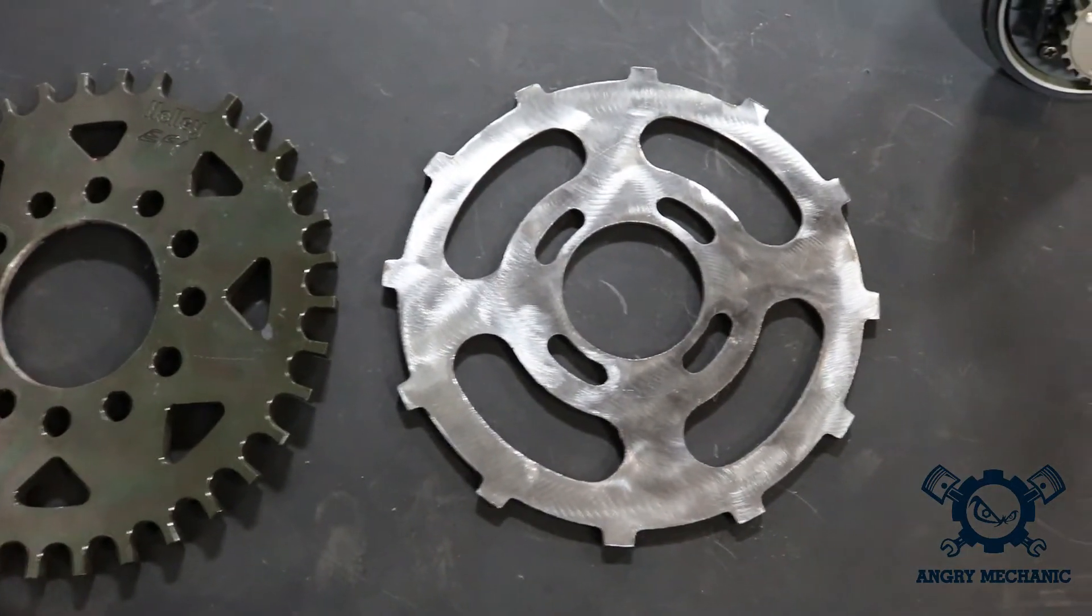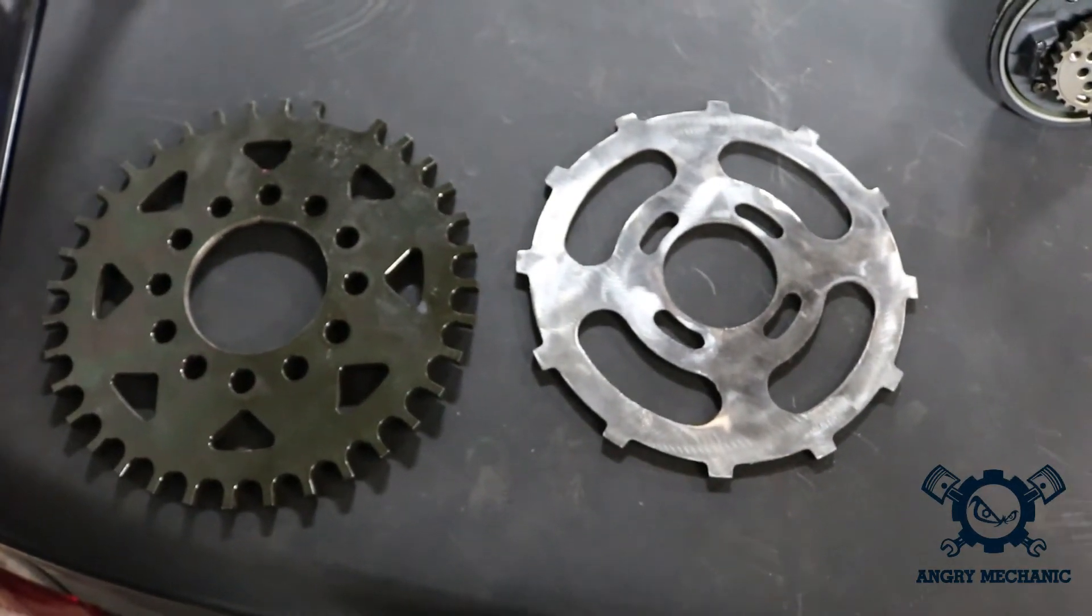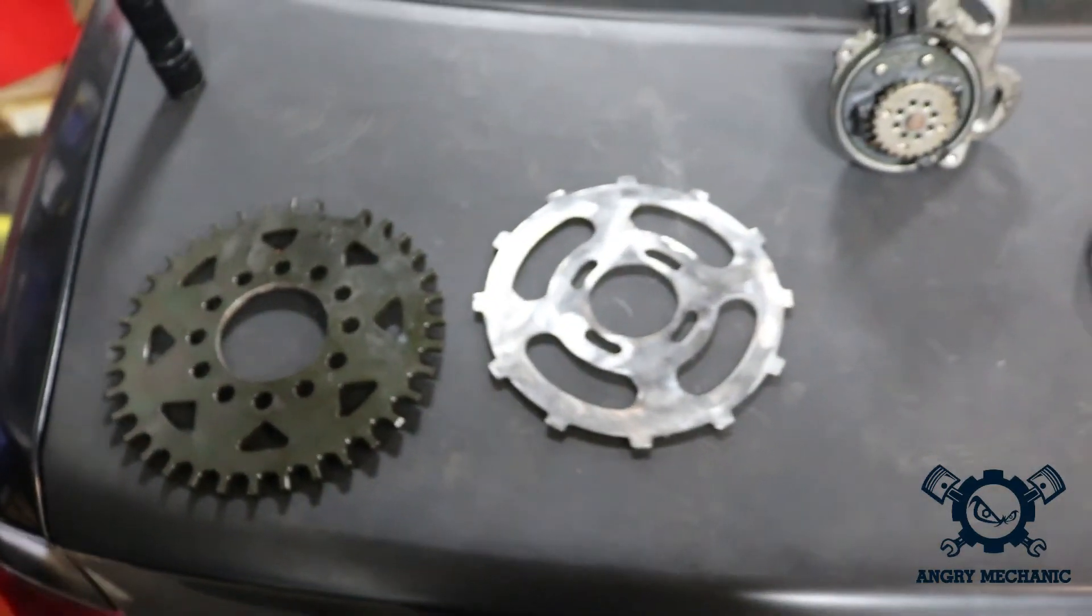So having the crankshaft teeth further apart like this gives us a little extra room for error. So we can avoid those trigger errors at high RPMs. I just wanted to touch on that a little bit as to why we're using the 12 tooth wheel over the 36. So let's just get on to the install and get our hands dirty.